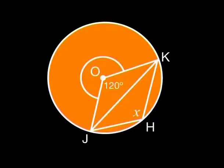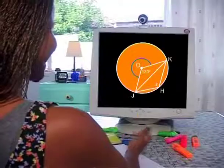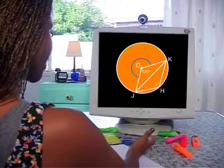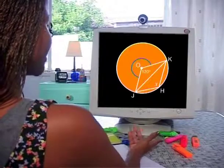Here is the next problem. Can you calculate angle X? Be careful — angle X is an angle at the circumference, but which angle at the center is subtended by the same arc? It is the reflex angle KOJ, not the angle given as 120 degrees. You can work out its size: 240 degrees. And angle X will be half that, which is 120 degrees.